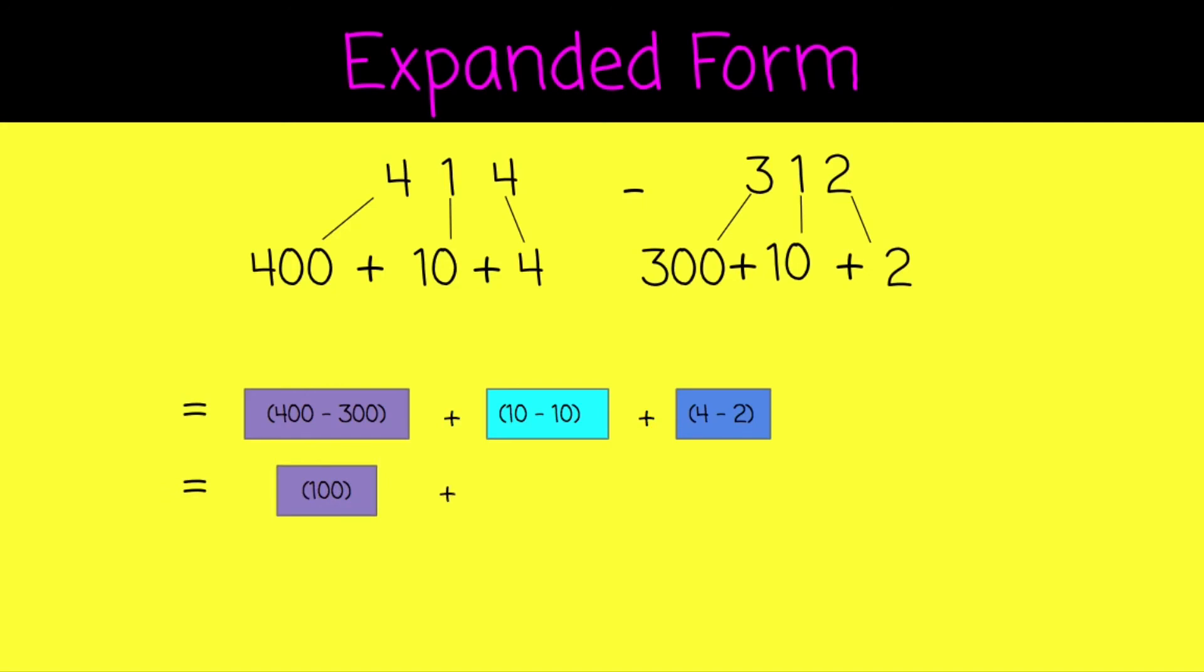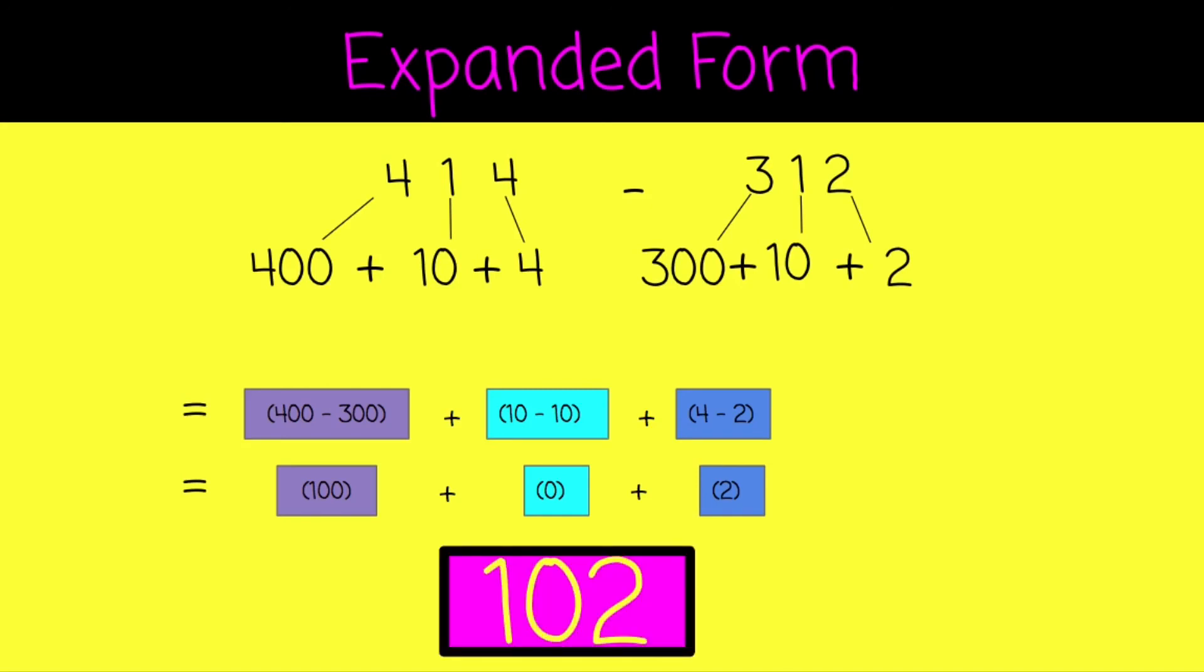Good, that leaves us with 100. 10 take away 10 is 0. And 4 take away 2 is 2, for a final difference of 102. I hope this video helps you understand how you can use the expanded form when subtracting.